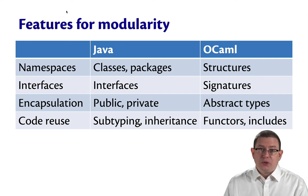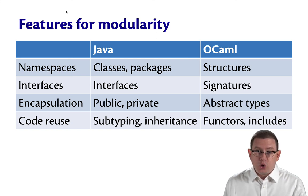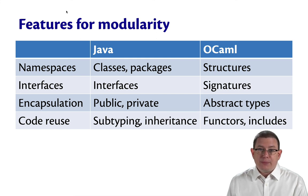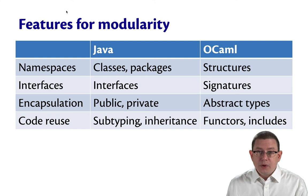Encapsulation, as you learned in 2110, is a really important part of modular programming. It's what enables that kind of local, not global, reasoning. Java provides encapsulation in part through visibility modifiers like public and private. OCaml provides similar functionality through something called abstract types.